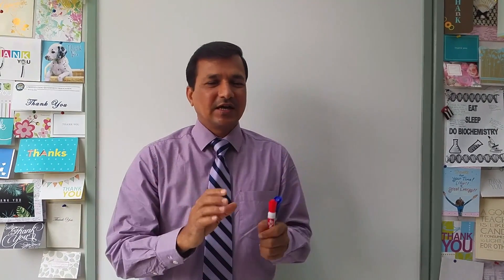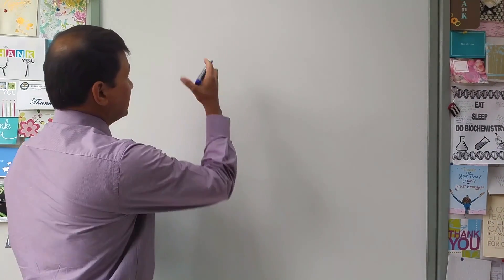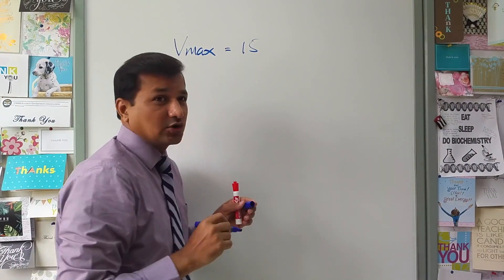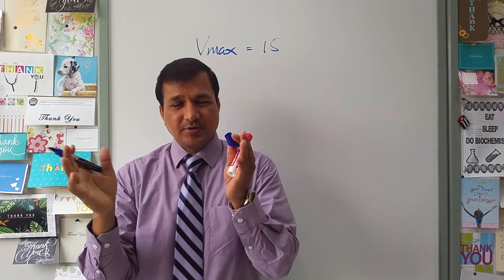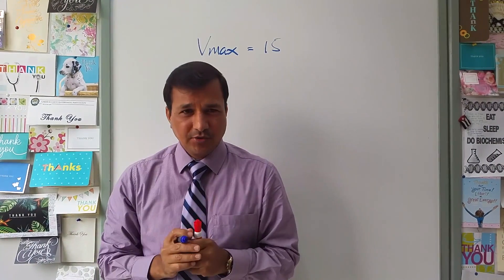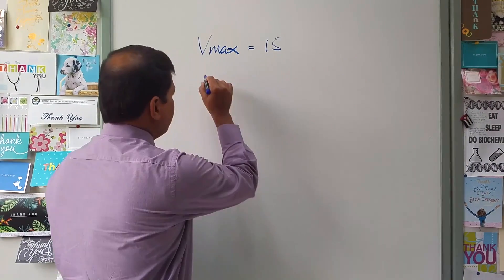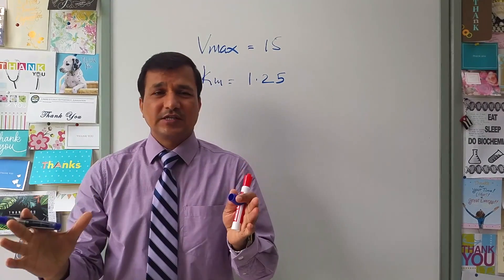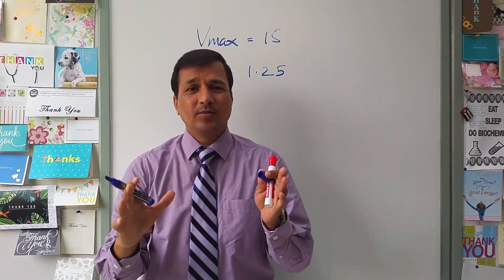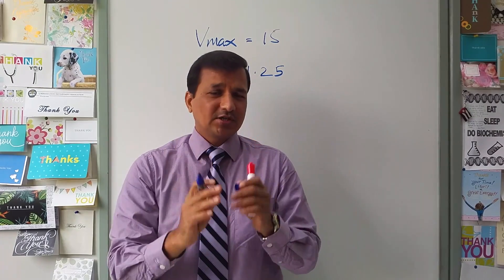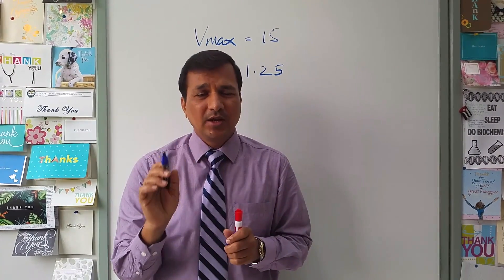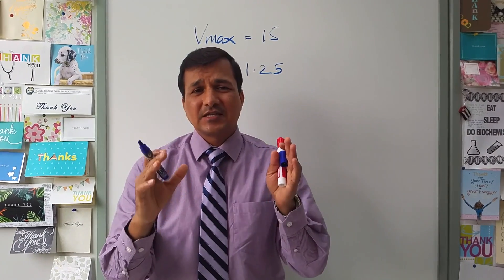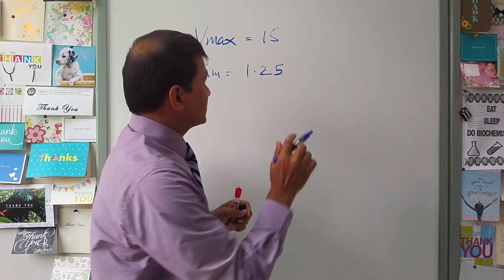In the question, the Vmax in the absence of inhibitor is 15 units per milligram of protein. The Km is 1.25 millimoles. The inhibitor concentration given in the question is 5 millimoles, and at this concentration, Vmax has dropped from 15 to 6.